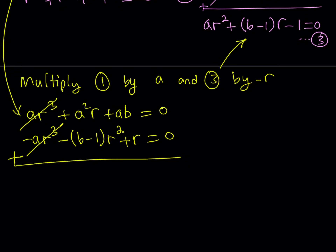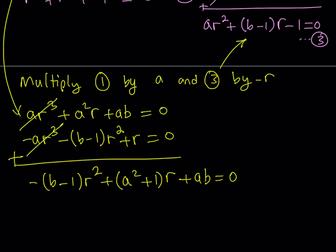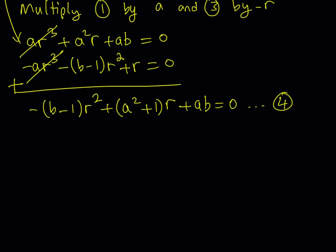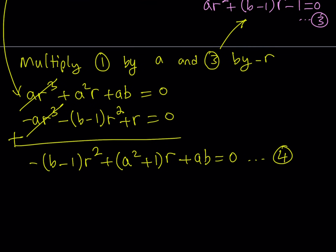After adding, we get the quadratic: −(B − 1)R² + (A² + 1)R + AB = 0. I'll call this equation number 4. So now I have four equations in total, and looking at equations 3 and 4 together should draw your attention to something useful.